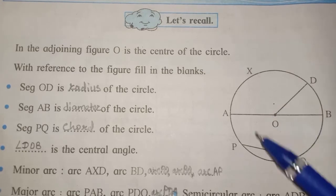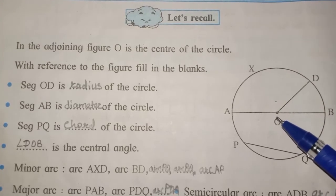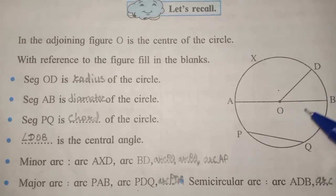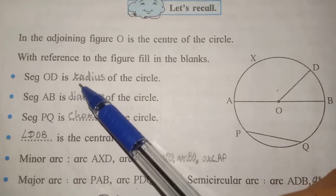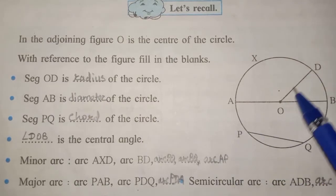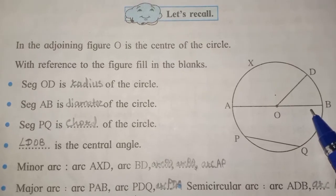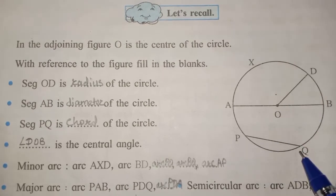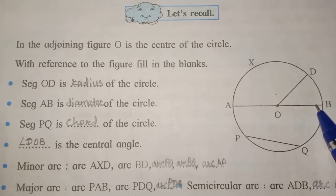Now children, look at this figure. In this figure O is the center of the circle. Segment OD is the radius of the circle. Segment AB is the diameter of the circle. Segment PQ is the chord of the circle. Angle DOB is the central angle.